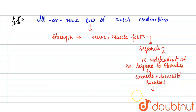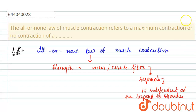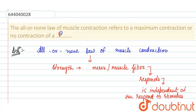If the stimulus exceeds the threshold potential, the muscle fiber gives either a complete response or no response to the stimulus. That means the muscle fibers either show maximum contraction or no contraction. So the correct answer for this question is 'muscle fiber'.